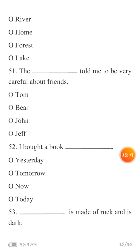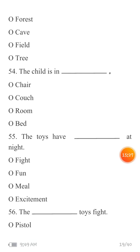MCQ 53: 'Blank is made of rock and is dark.' What is made of rock and is dark? Your options are: forest, jungle, cave, field, or tree.